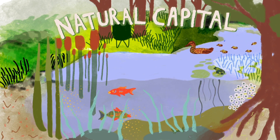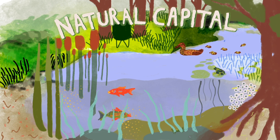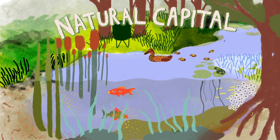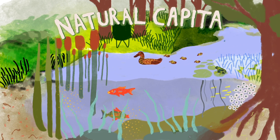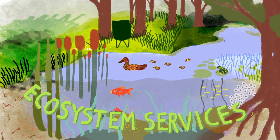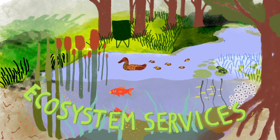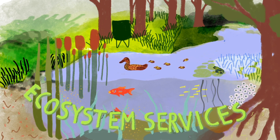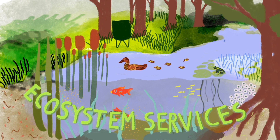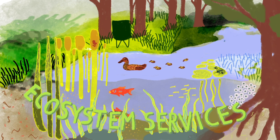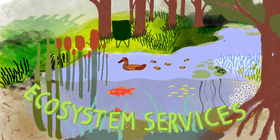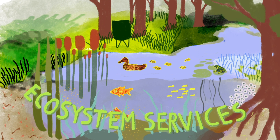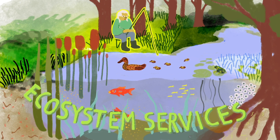But why do we care about this? For this part of the story, we need to consider the flows from the asset, called ecosystem services. The wetland provides a whole range of ecosystem services, like water purification, sediment retention, habitat for species and cultural enjoyment.